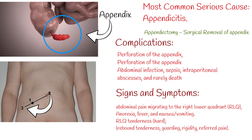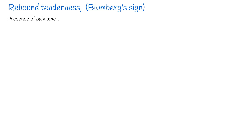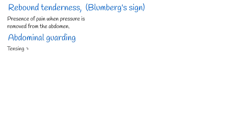On examination, RLQ tenderness is found along with classical signs of peritoneal irritation, such as rebound tenderness, guarding, rigidity, and referred pain. Rebound tenderness, also known as Blumberg's sign, refers to the presence of pain when pressure is removed from the abdomen rather than when applied. Abdominal guarding is the tensing of the abdominal wall muscles to guard inflamed organs within the abdomen.